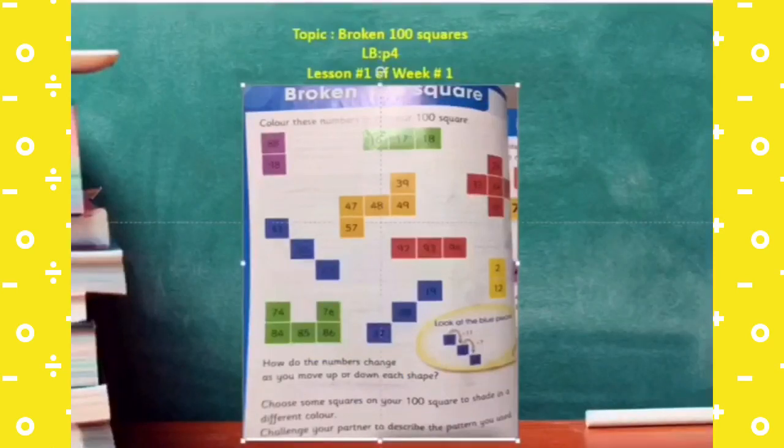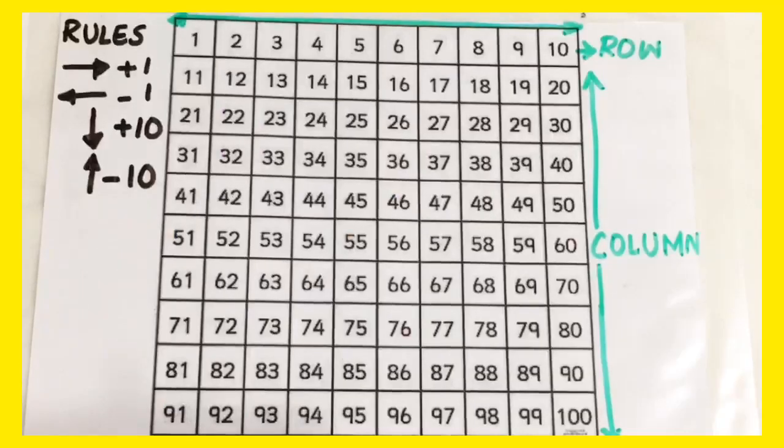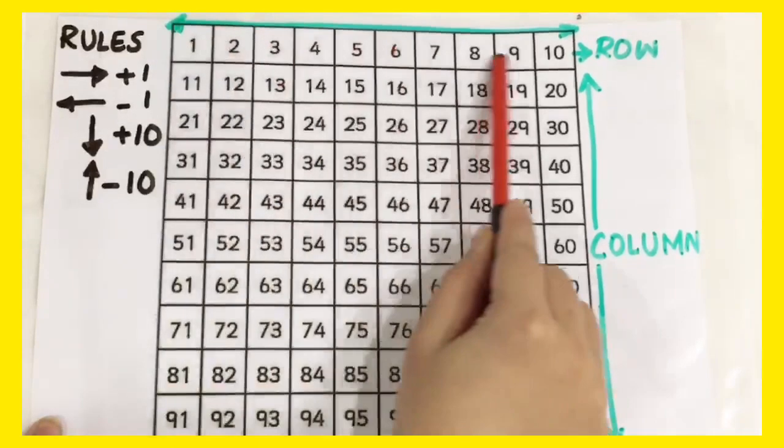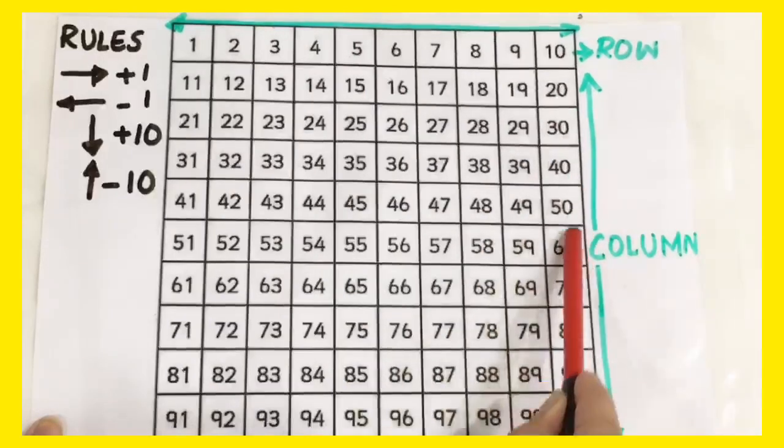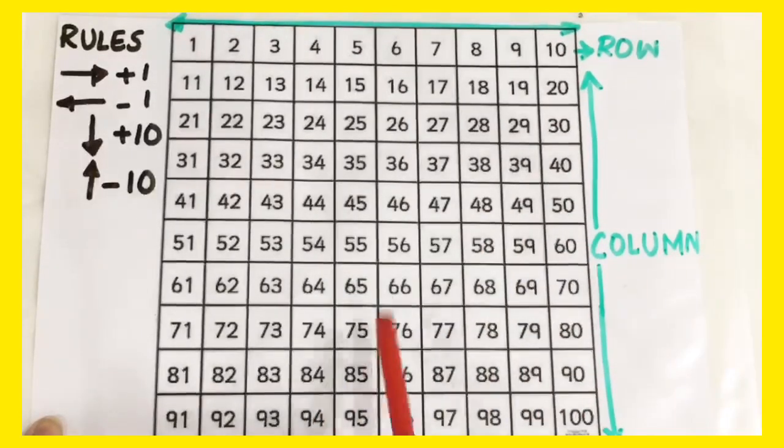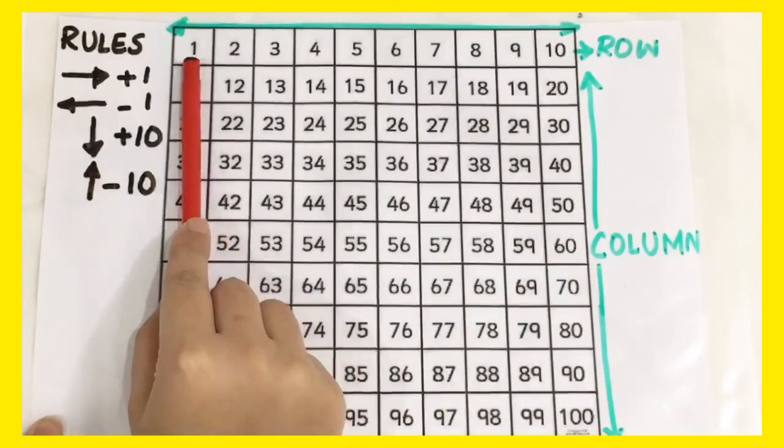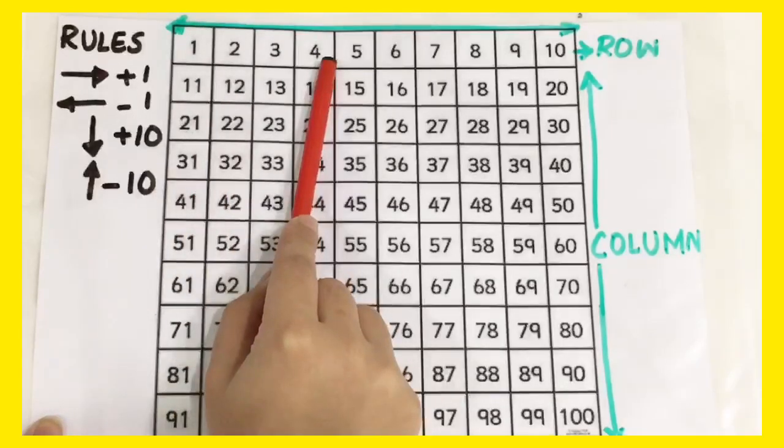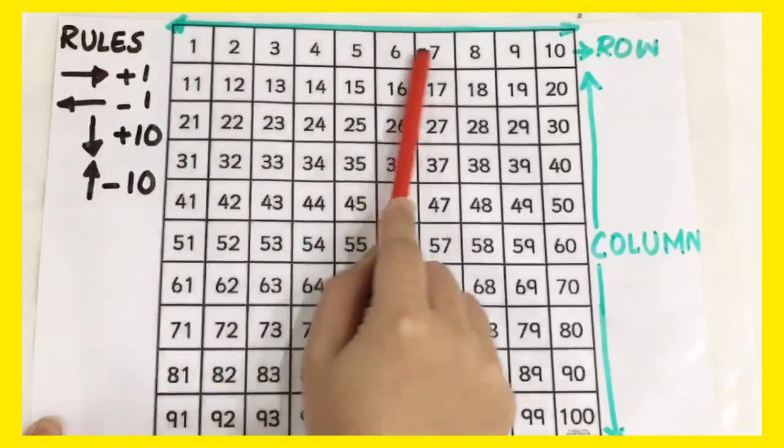You can see some sections that have been made on that page. These sections are taken from the 100 square chart. Using this 100 square chart, we will learn what patterns are being made when we move in a row and what pattern of numbers is being made if we move in a column. The numbers are written in increasing order, from the smallest to the largest in a row.